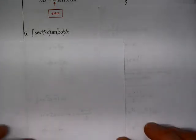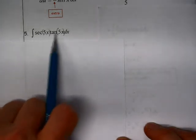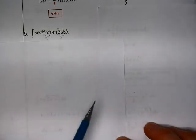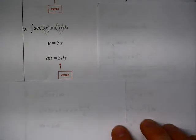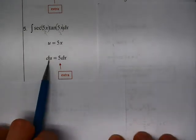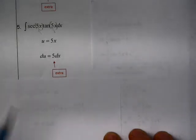Here we have secant of 5x tangent of 5x dx. When we look at this, remember that 5x is the argument of the secant and the tangent. If you think secant tangent, that should bring to mind the end result of one of our derivative rules. I'm going to let u equal the innermost parts of the argument. In both cases here, the argument of the trig functions is 5x. I'm going to let u equal that 5x. When I take the differential of u, I get 5 dx. That 5 is an extra, so I have to offset that with a one-fifth.